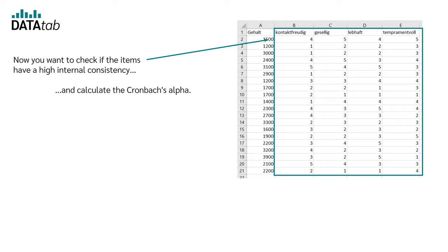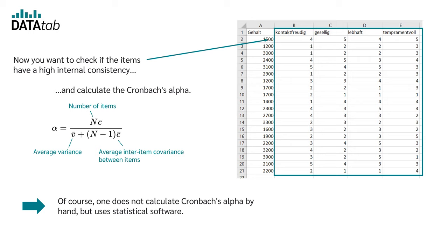You can calculate Cronbach's alpha with the formula, where n is the number of items, v bar is the average variance, and c bar is the average inter-item covariance between items. Of course, one does not calculate Cronbach's alpha by hand, but you use a statistical software. I will now show you how to do this and, above all, how to interpret the results.